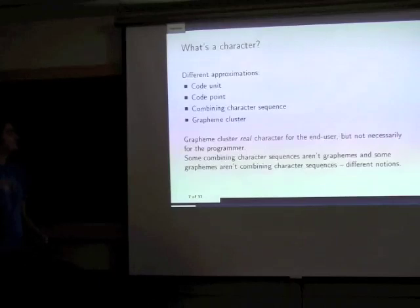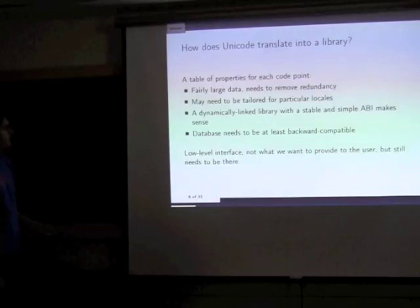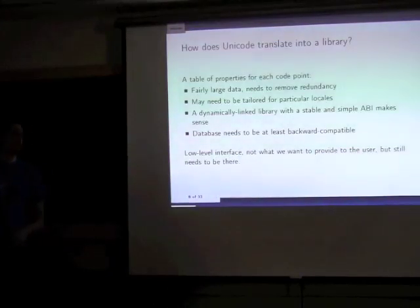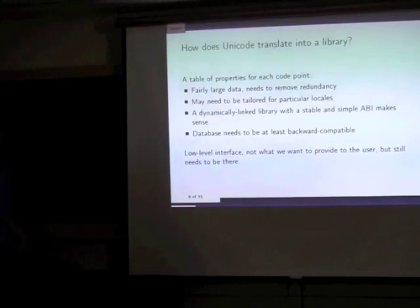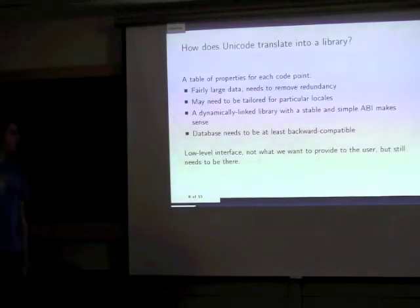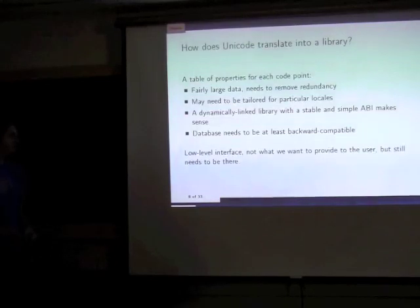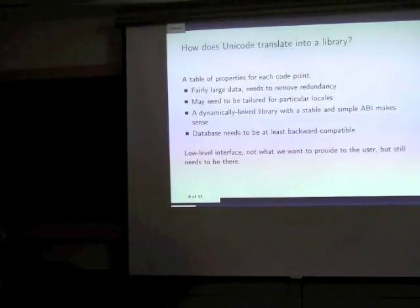So what do we need for a Unicode library? First we need to set up the table that contains all the properties for each code point. This is going to be pretty large — 1 million code points each with maybe 20 properties. This data differs depending on locale: some properties are considered different depending on which language you're dealing with. That's why I think we need dynamically linked libraries so we can swap in one tailored to a particular use.